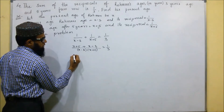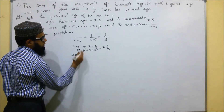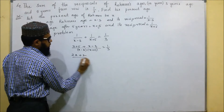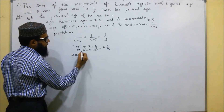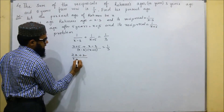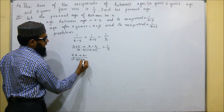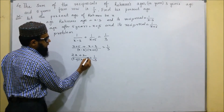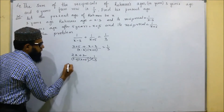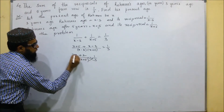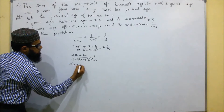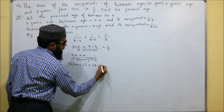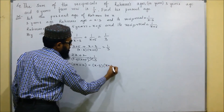X plus five plus X minus three gives us two X plus two. So two X plus two over (X minus three)(X plus five) equals one by three. We can cross multiply, giving us 3 times (2X plus 2) equals (X minus 3)(X plus 5).